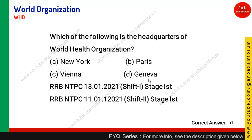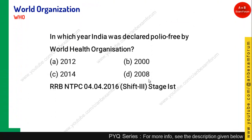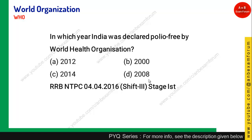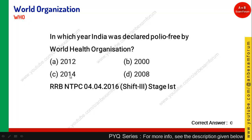In which year was India declared polio-free by WHO? As you know, India is now polio-free. There was a polio vaccination drive associated with Amitabh Bachchan, and in the year 2014, WHO declared India as polio-free. So option C is correct.